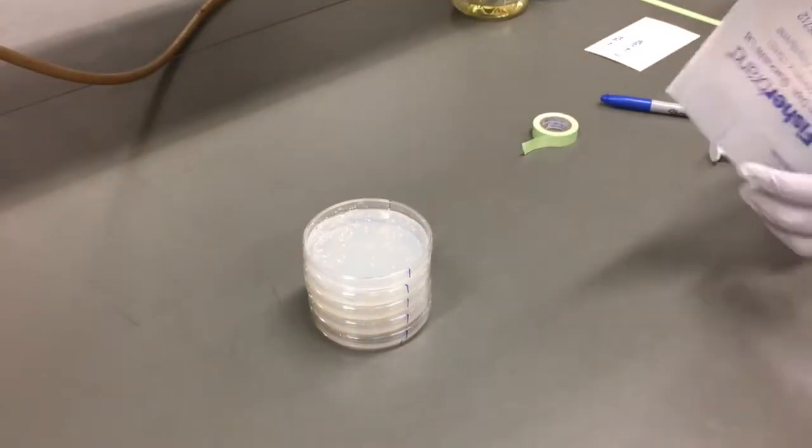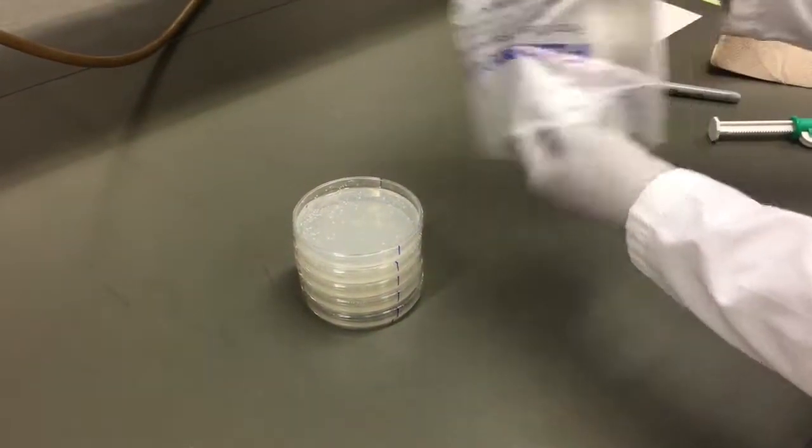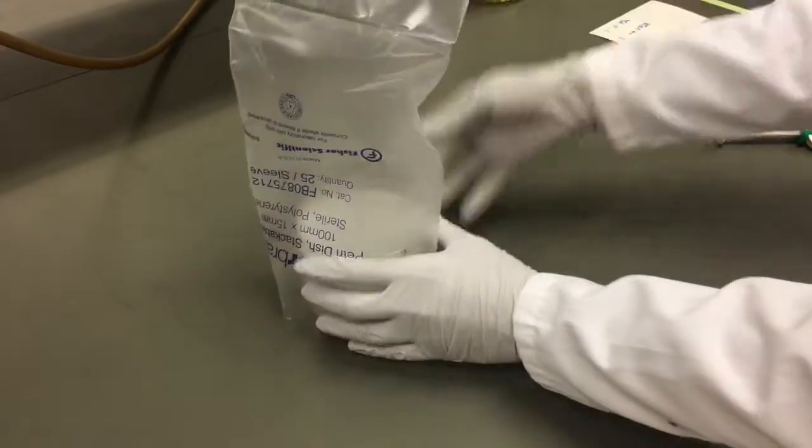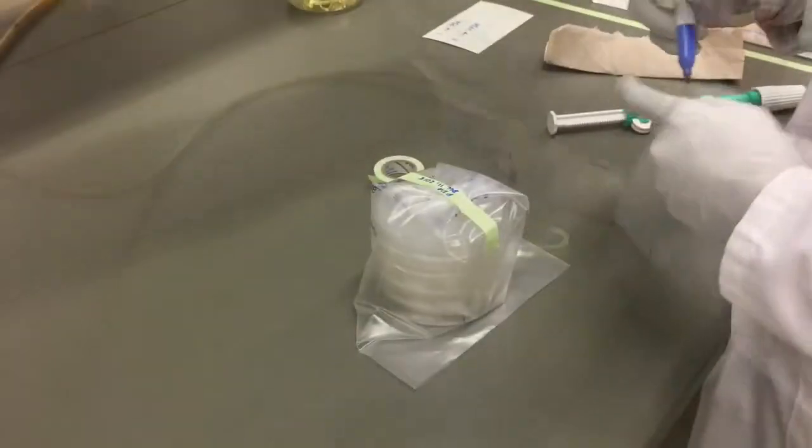Once plates have solidified, mark the edges of the plates with a color specific to your media type instead of having to label the bottom of each dish. Return the plates to the original bag, being sure to slip the bag over top, do not slip your arm into the bag. Label the bag with the media type and date prepared.